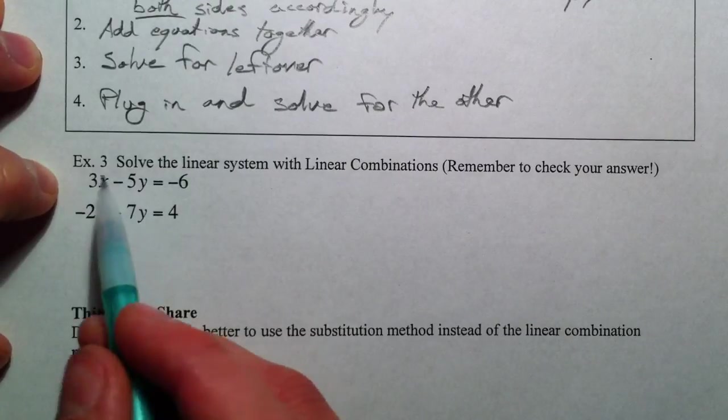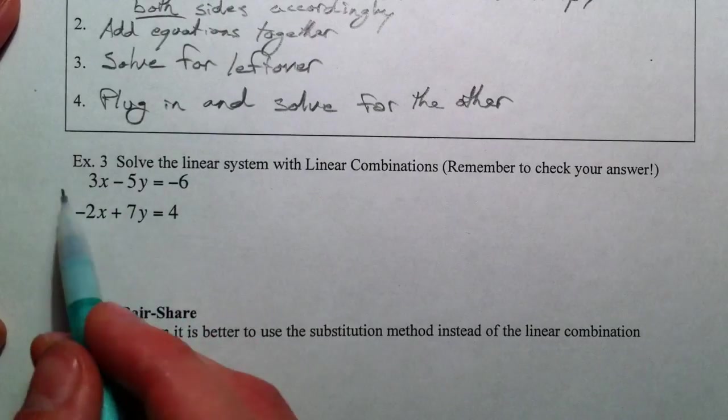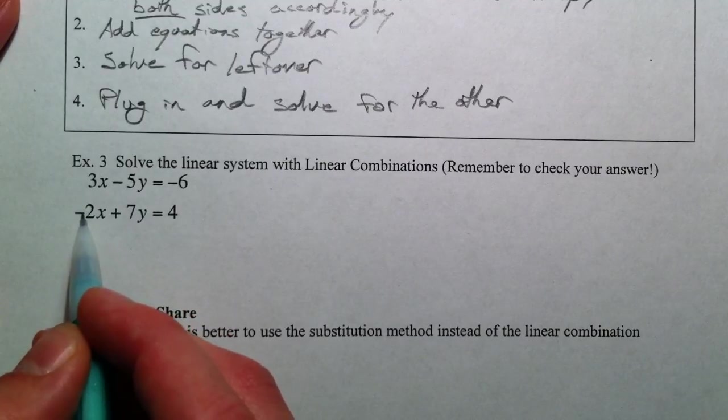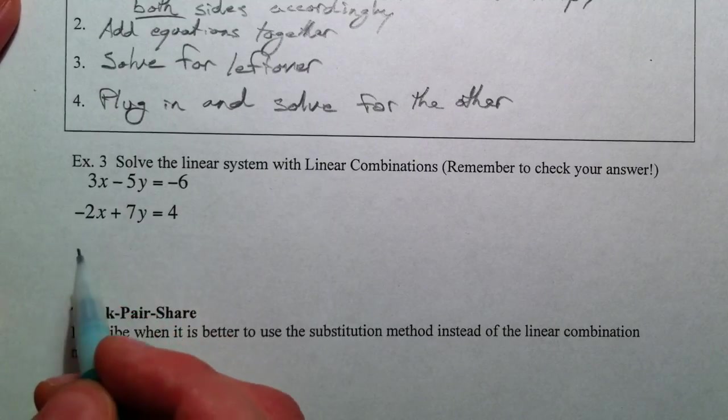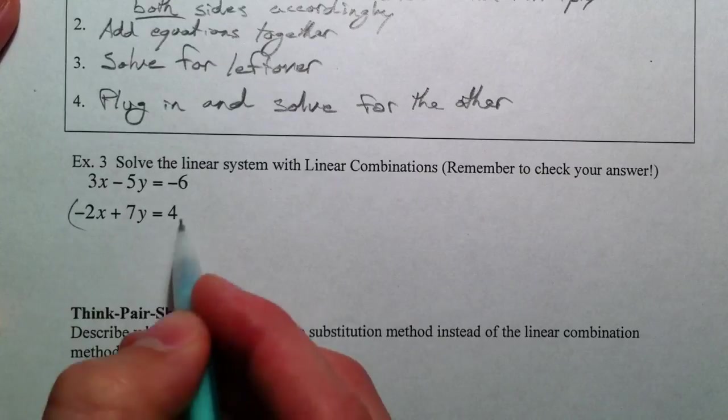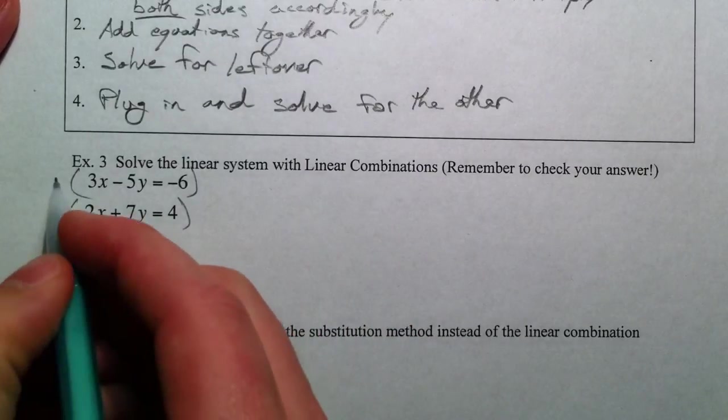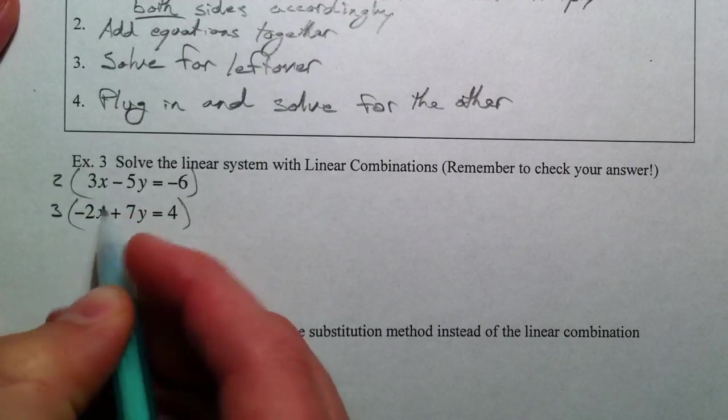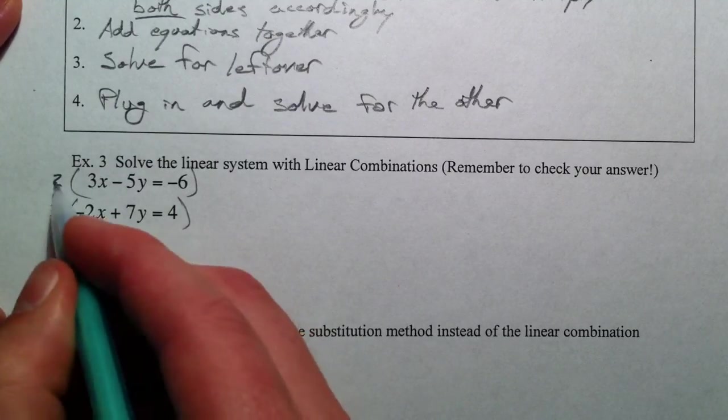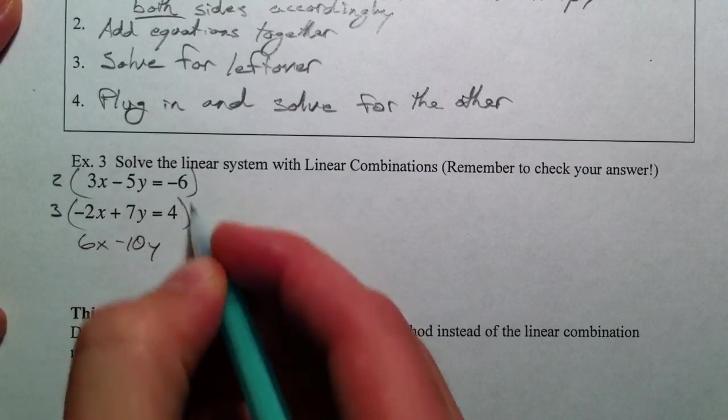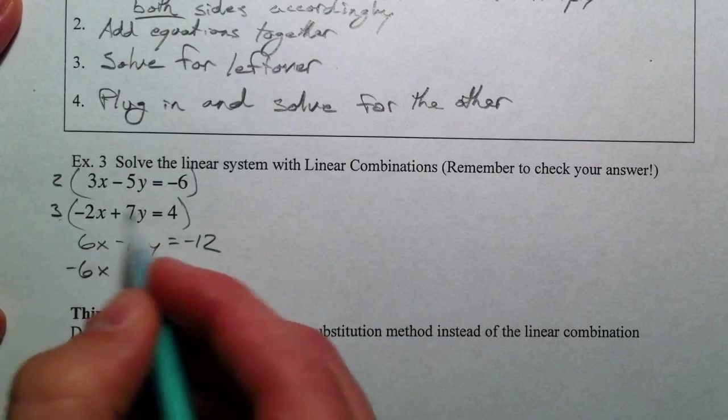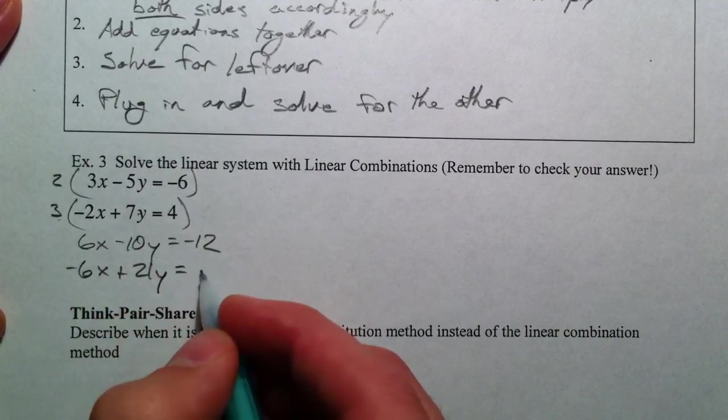So, next example. It's not quite as easy as the first ones because we have to multiply both by something. Now, technically, you could multiply just the one by one and a half to get to three. We just like to stay away from multiplying by one and a half, but it would be possible. So, what if we multiplied this bottom one? Think of it like common denominators. Multiply the top by a two and the bottom by a three. Because that way, we can get it to 6x and negative 6x. So, 6x minus 10y equals negative 12. Negative 6x plus 21y equals 12.